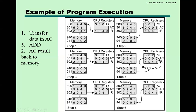The accumulator value is now 5 instead of 3. After that, the PC value is incremented from 301 to 302. At 302, the next instruction is 2941. This is loaded into the IR. The opcode 2 means the accumulator value is stored back into memory. So whatever value is in the accumulator will be stored into memory at location 941. This is the main important concept of how your program executes in the processor.